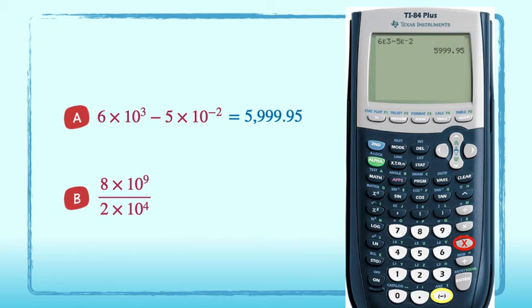Now for part B: 8 times 10 to the 9th divided by 2 times 10 to the 4th. And enter. The answer is 400,000. Good job.